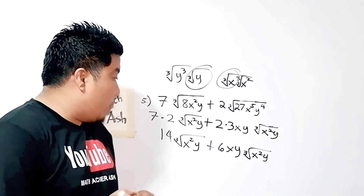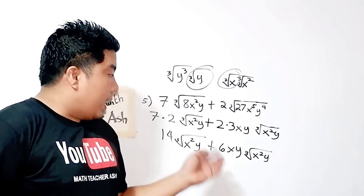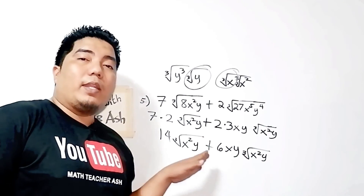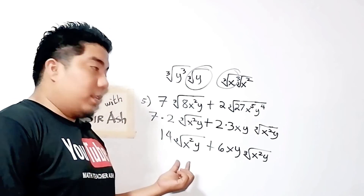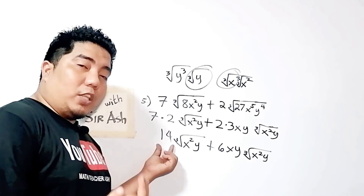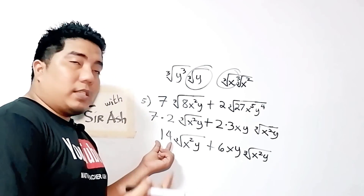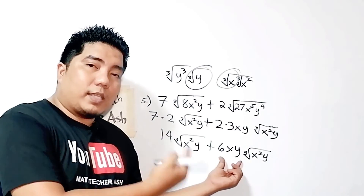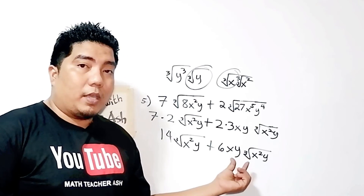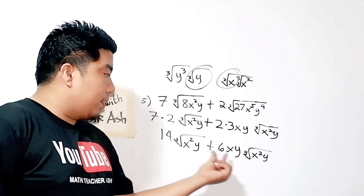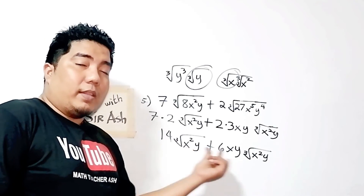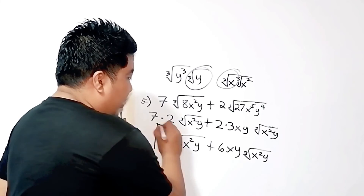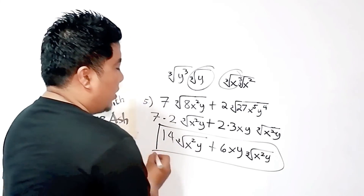Now my dear math learners, can we add these two? Although they have the same radical expression, the coefficient of the first term is 14 without a variable, while the second term has 6xy. Basically, they are not the same — they are not like terms. Therefore, our final answer will remain as 14 cube root of x squared y plus 6xy cube root of x squared y.